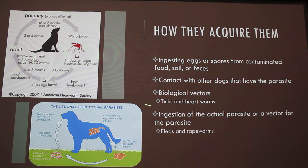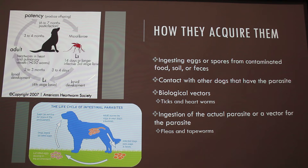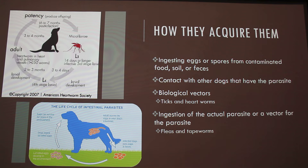Biological vectors are another way. Ticks are considered a biological vector because they can carry other diseases and parasites — ticks carry Lyme disease. Mosquitoes are the biological vector for heartworms. Heartworms go through different stages: stages L1 through L3 are actually in the mosquito, and then L4 and L5 are in your dog. The adult mature heartworm lodges in the heart and will kill your dog if you don't treat it.